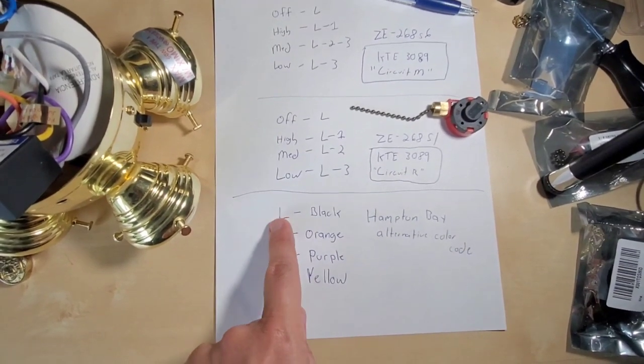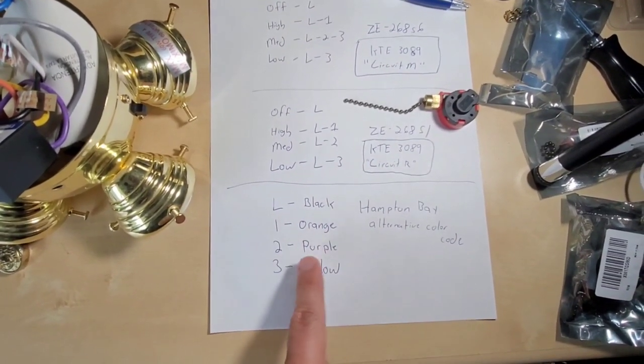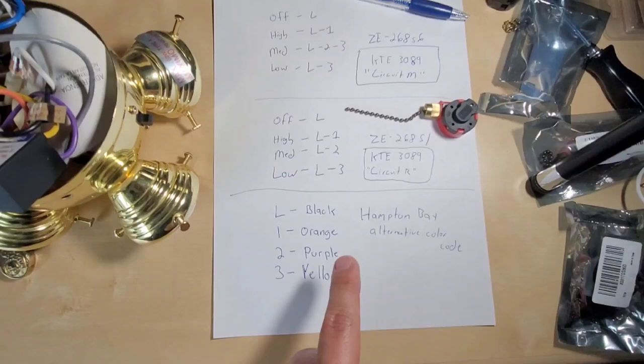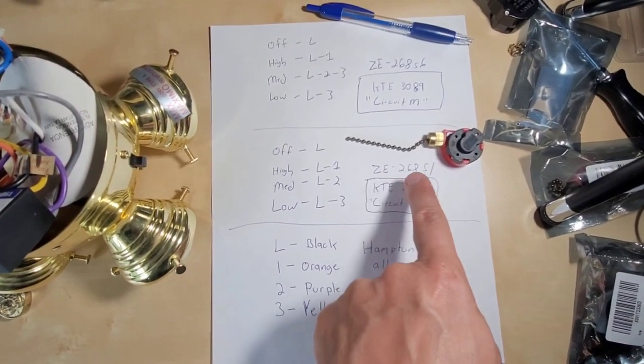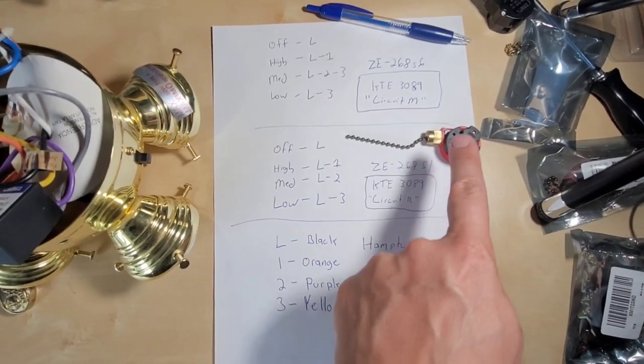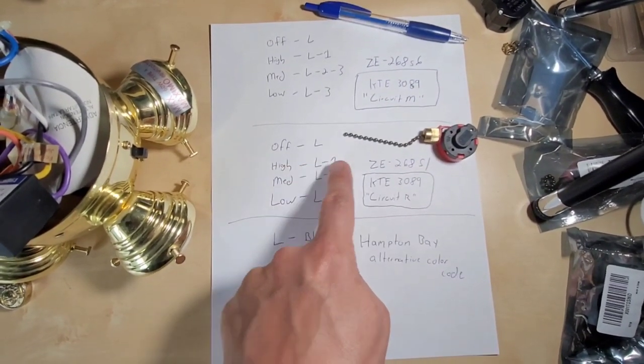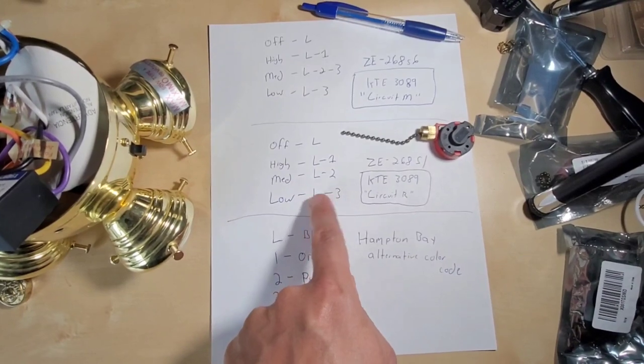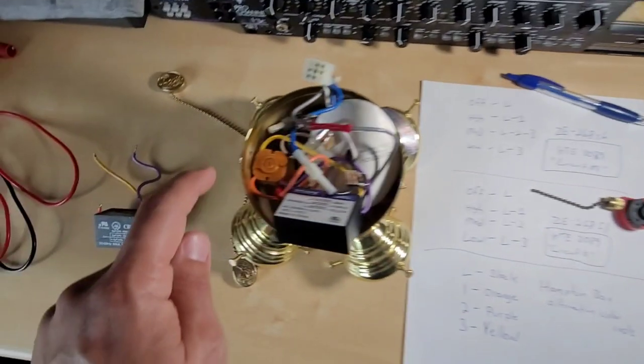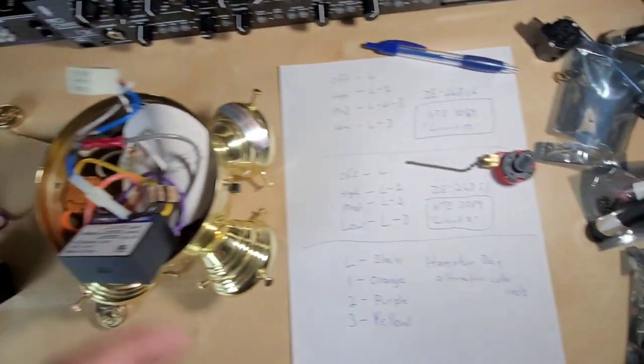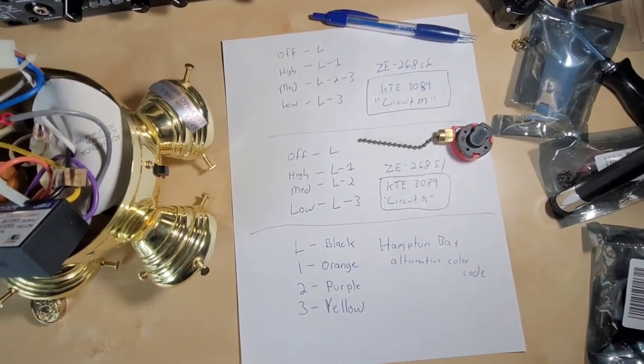I've actually written out what the color code is here. So for Hampton Bay, L is black, one is orange, two is purple, and three is yellow. What I thought it was is this kind of switch, a ZE 268 S1, and that basically means L goes to one, L to two for medium and low L to three. That's a KTE, the part number 3089, but they call it circuit R.